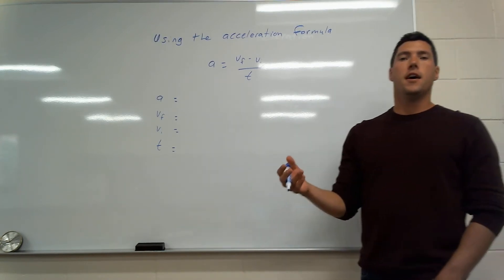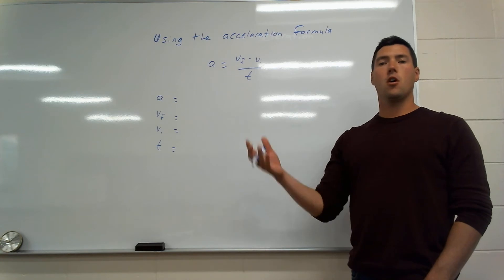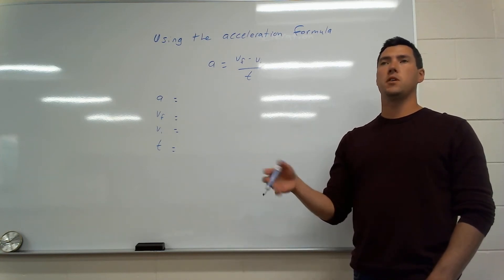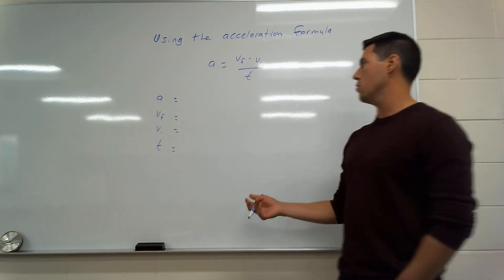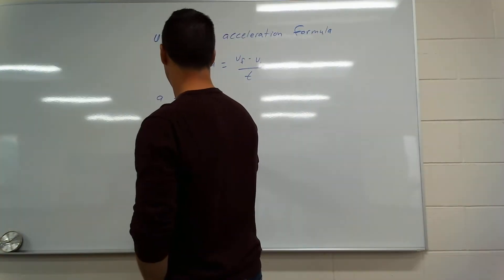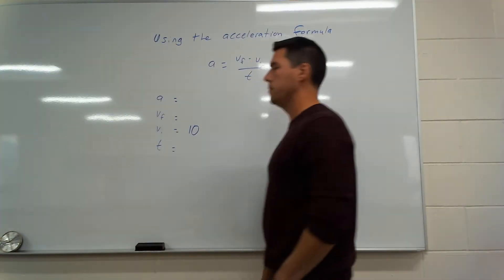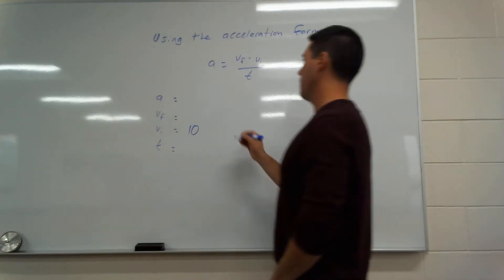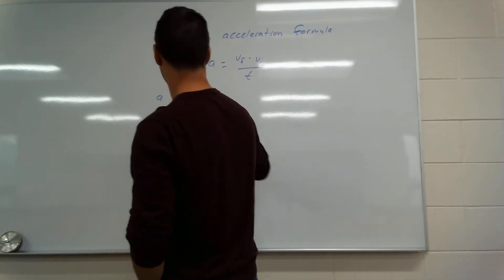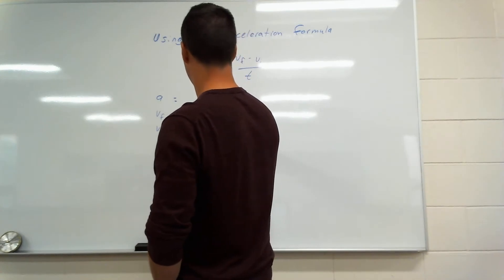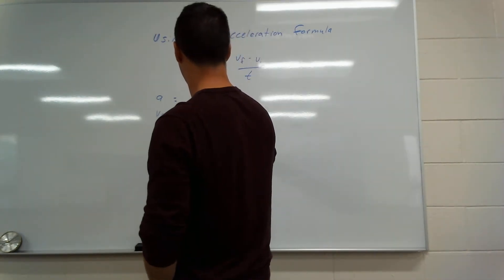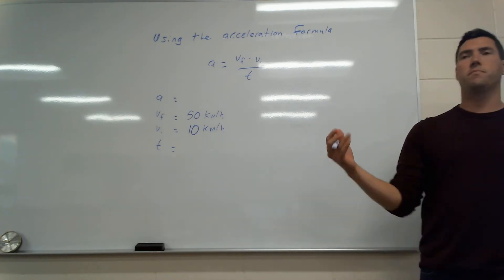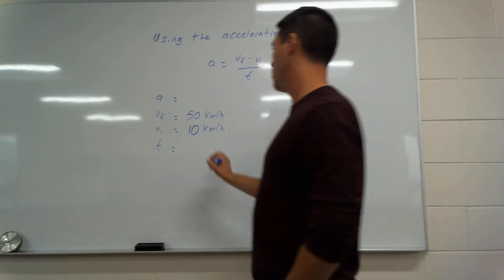First question: a car was driving down the street at an original speed of 10 kilometers per hour — that's our vi. It then sped up all the way to 50 kilometers per hour — that's our vf.